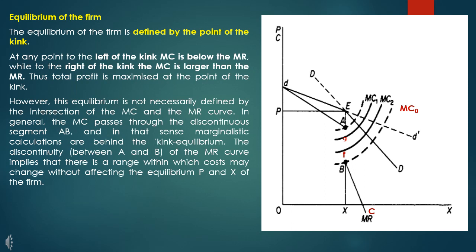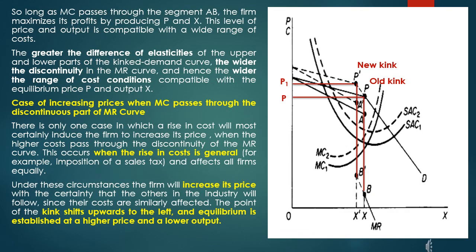As a conclusion, we can say that the kink point defines the equilibrium of the firm. The firm's marginal cost curve intersects the discontinuous portion AB of the MR curve, and this determines the price level of the firm.